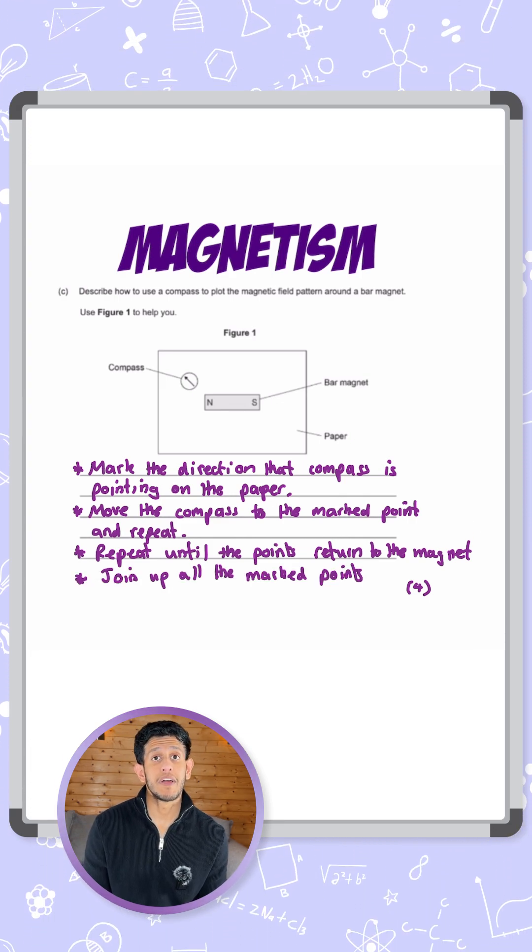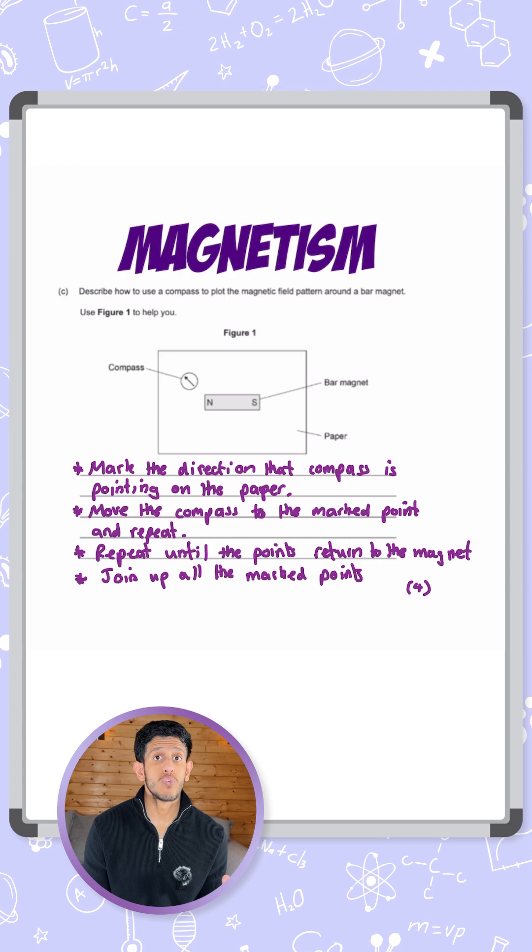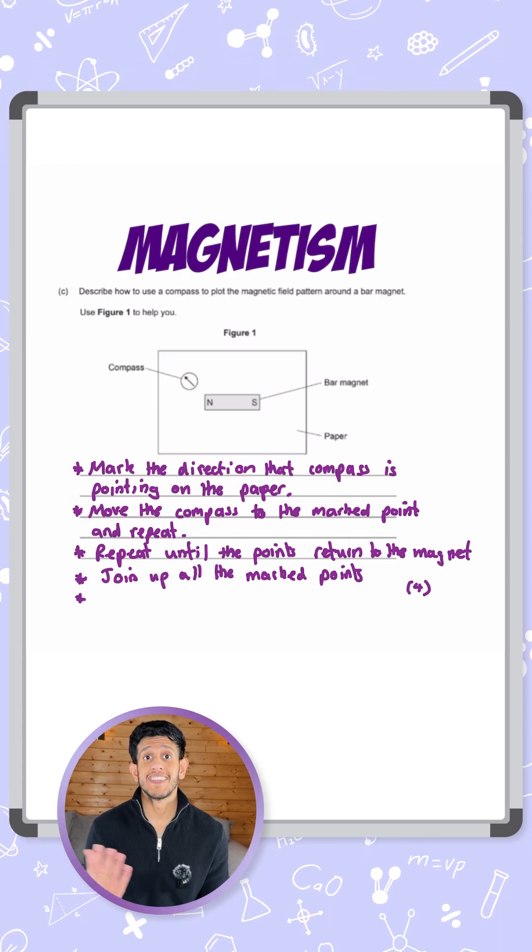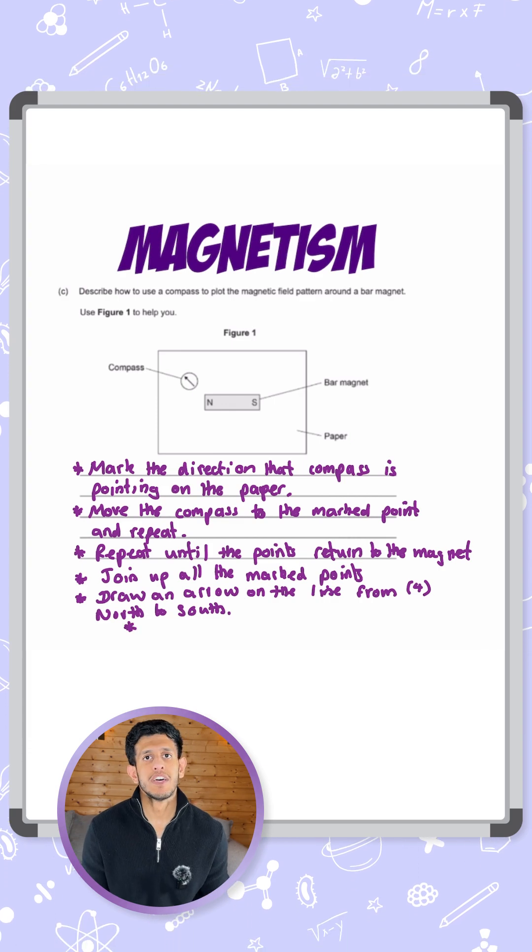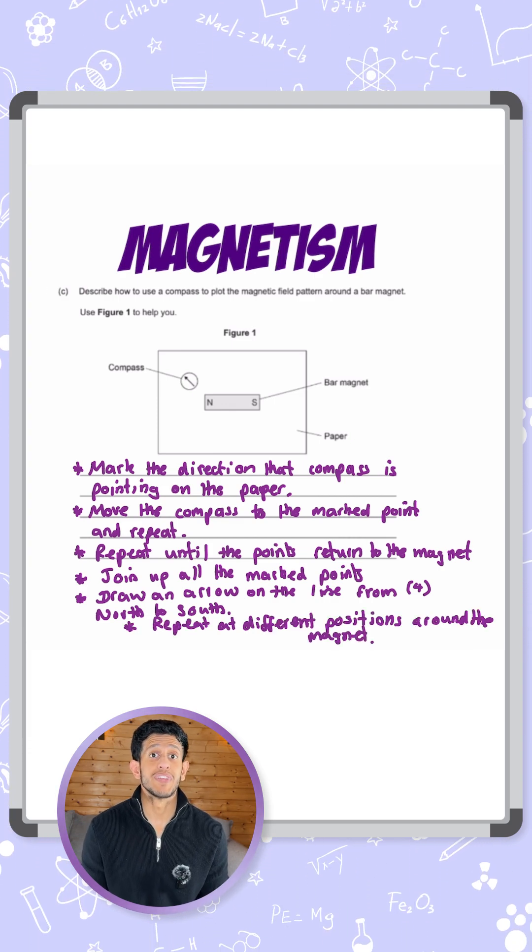You need to show the direction of this field, so draw an arrow going from the north pole to the south pole. Lastly, you want to repeat this process from different points around the magnet to give you multiple field lines, and that's all you need for full marks.